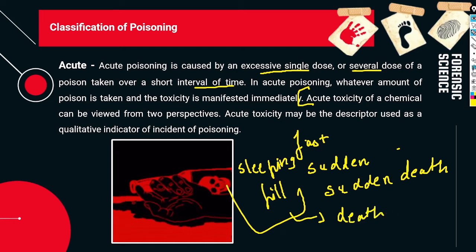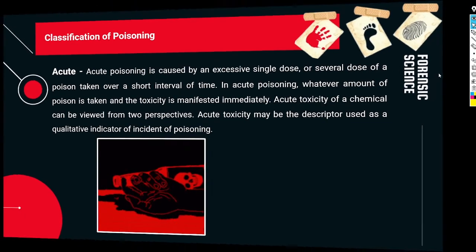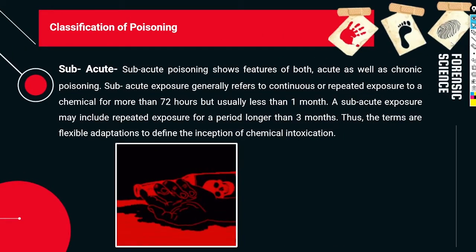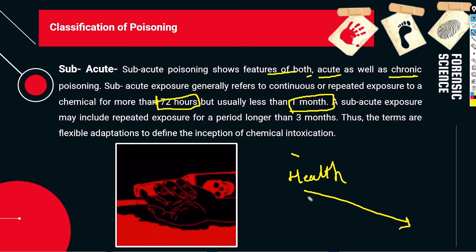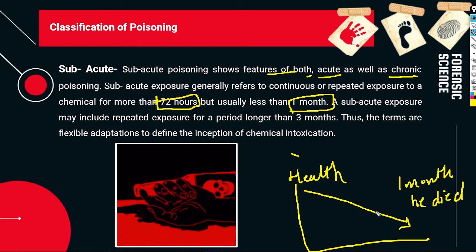Subacute poisoning shows features of both chronic and acute poisoning. The effect appears within 72 hours or less, and may usually extend up to one month. For example, a person who has been poisoned shows a slowly decreasing health graph over time — declining gradually until death occurs within one month. The timeframe can vary.